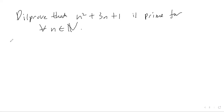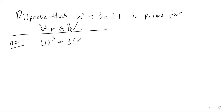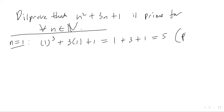We're going to substitute different n values into the expression and see what we get. If we pick n = 1, we get 1² + 3×1 + 1, which is 1 + 3 + 1 = 5. That is a prime number — I'll denote that with a capital P for prime.